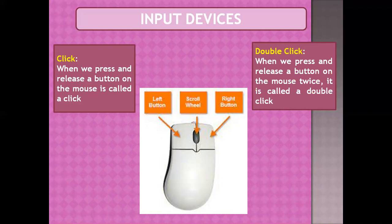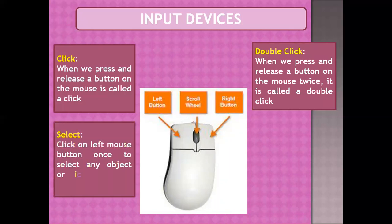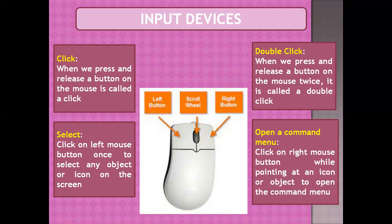Double click is when we press and release the left mouse button twice. Double clicking on an icon gives the computer the instruction to open that icon. Clicking the left mouse button once selects an object or icon on the screen — move the pointer over the object, click it, and it will be selected. To open a command menu, click the right mouse button while pointing at any icon or object — this is called right click.